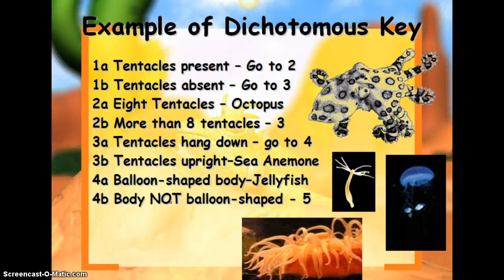Here's an example: at 1a or b, are tentacles present? You would go to 2 if there are tentacles; if tentacles are absent, you go to 3. If we take the first organism pictured, we go to 2 — 8 tentacles. If there are 8 tentacles, then it's an octopus. If there are more than 8 tentacles, you go to 3. Do the tentacles hang down? If yes, go to 4; if the tentacles are upright, then it's a sea anemone. If it's a balloon-shaped body, it's a jellyfish; if not balloon-shaped, you go on to 5. You look at the two characteristics and decide which one it has, then move on or identify the organism. We will practice some of these together as a class, and also one individually as a kind of a lab.